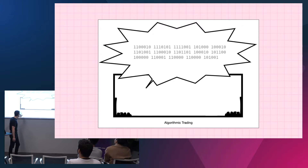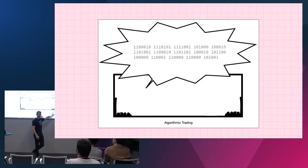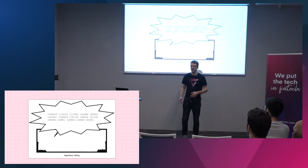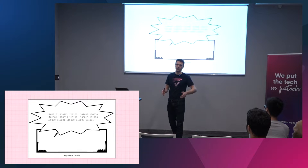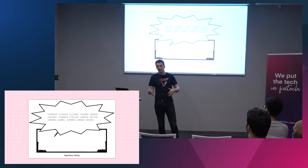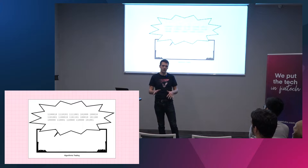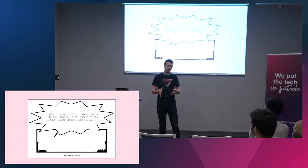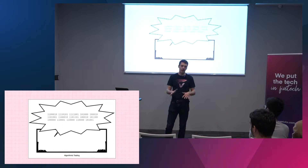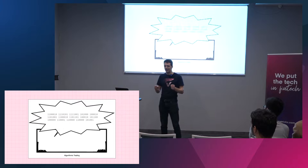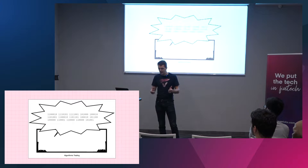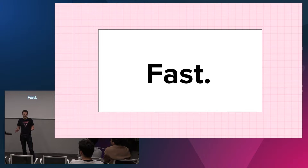These computers here, nicely illustrated, are trading engines. They are computers that are programmed to listen to events on the exchange and based on those events, do some processing and execute orders. And these trading engines need to be really fast.